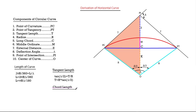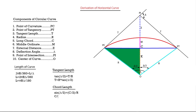For chord length, KPC is the midpoint of the chord. Looking at the green triangle, sin of delta over 2 is equal to C/2 divided by the radius R. Rearranging, C/2 is equal to R times sin(delta/2). Therefore, the chord length C equals 2 times R times sin(delta/2).